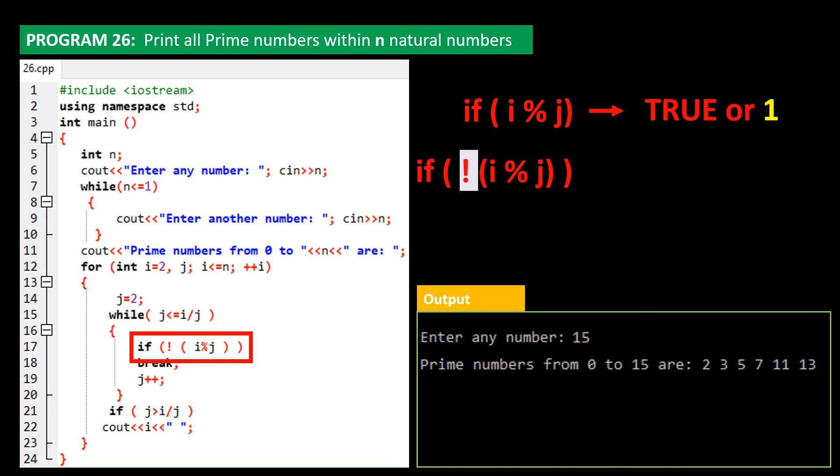It simply instructs that if i divided by j gives the remainder 1, then do something. On line 17, note that we have used the condition if not i mode j, and this should mean false or 0. Try tracking the program flow.